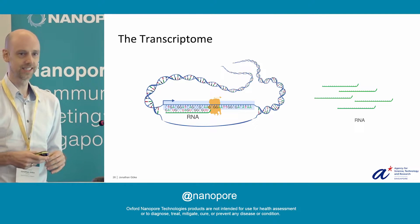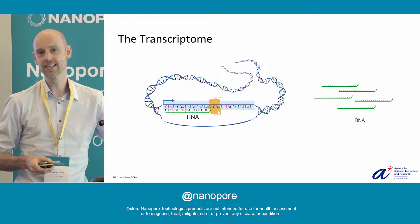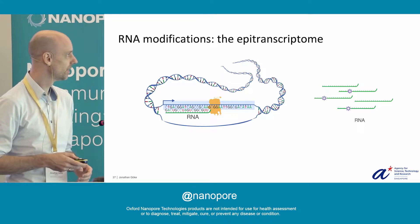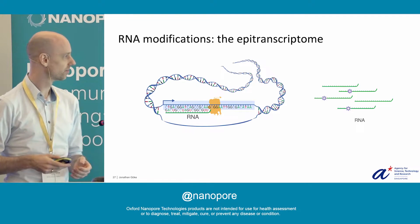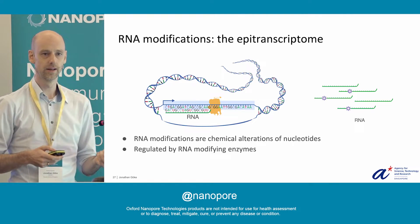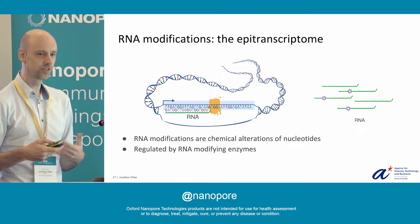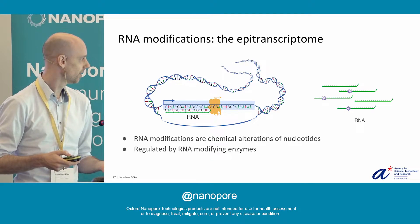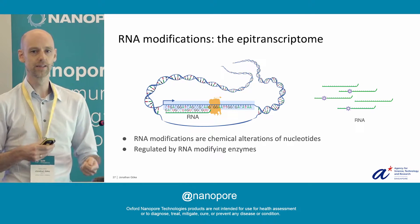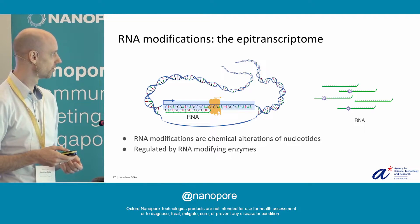But today I want to talk about one additional thing: even if the RNA sequence is the same, it can still be functionally different, and that's because of RNA modifications. These RNA modifications are chemical alterations of nucleotides. They are written by writer enzymes, and they can be removed by eraser enzymes. They are then interpreted through reader enzymes, and that way these RNA modifications can actually impact how the RNA itself is interpreted and its function.